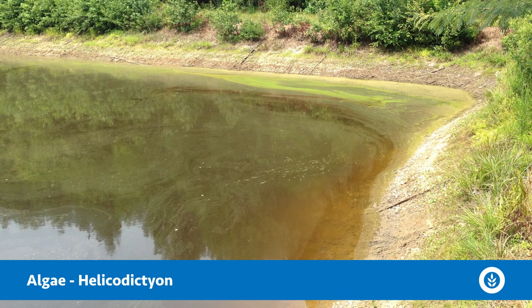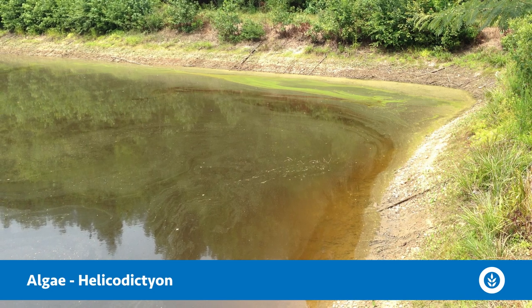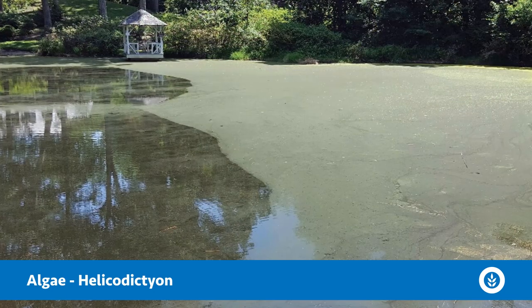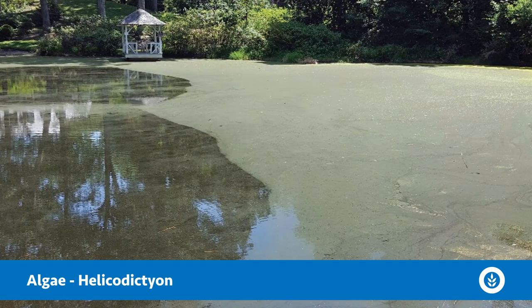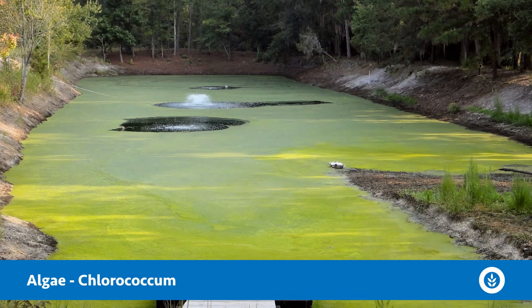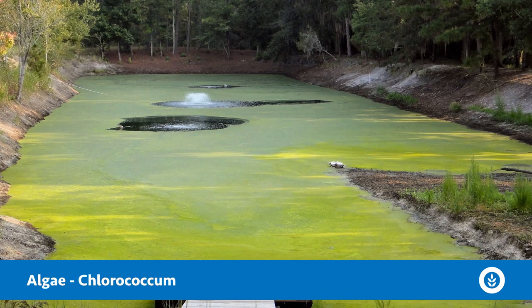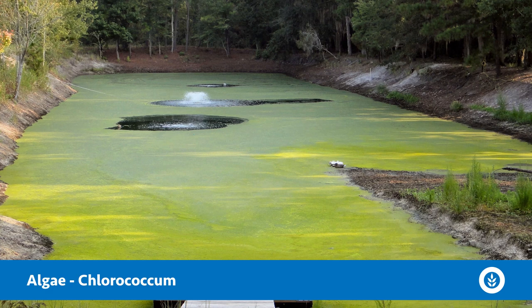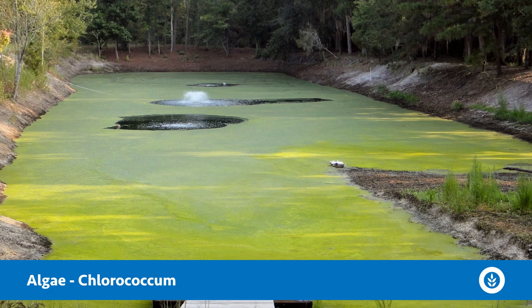Another algae that can form bright green surface films is called Helicodiction. It traps little gas bubbles and pops up to the surface. There are a few other types of green algae that can form a green film, like Chlorococcum — they can cover the entire surface of the water body and are typically a bright green color.